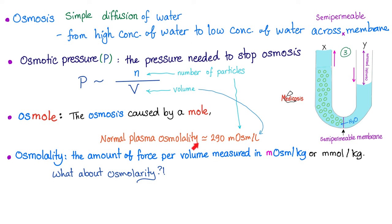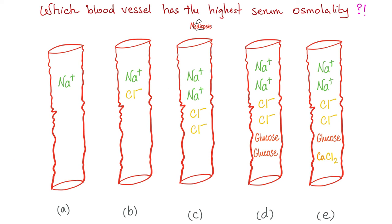What's the normal plasma osmolality? About 290 — if you say 300, it's okay. That's the number of milliosmoles per volume. Quiz time!